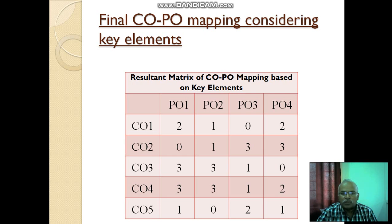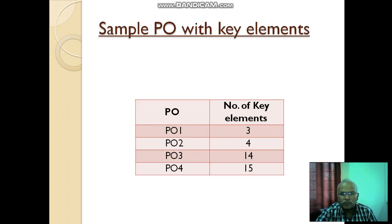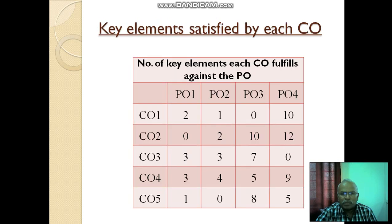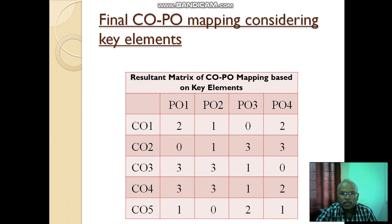Similarly, PO4 also you can consider. You can look into the total number of elements under PO4 is 15. Now, initial matrix if you see, it is 10 elements. So, 10 by 15 into 100, which gives you less than 70%, it is 2. So, this way you can create a resultant CO-PO mapping based on key elements which are essential of any program outcome.